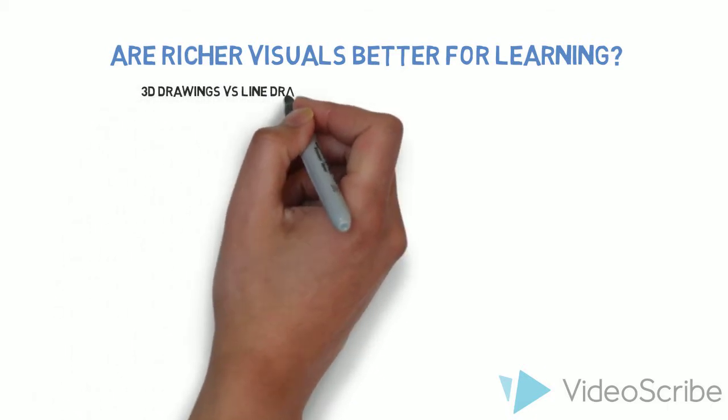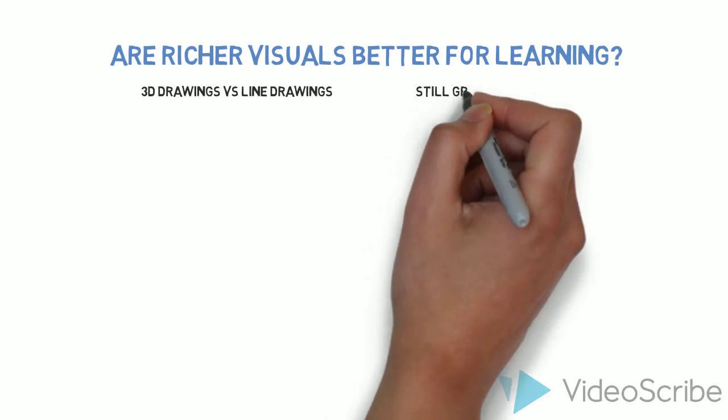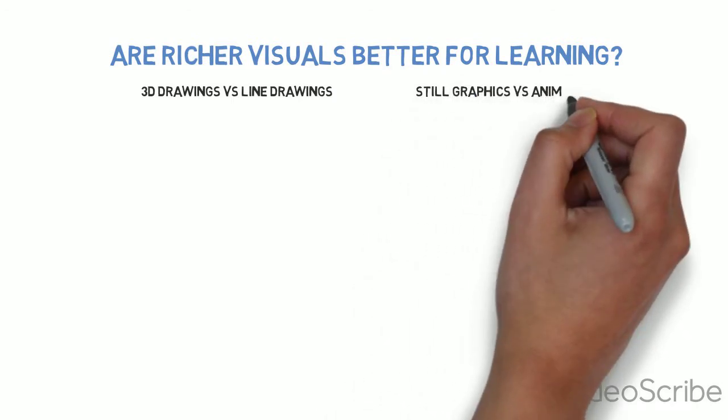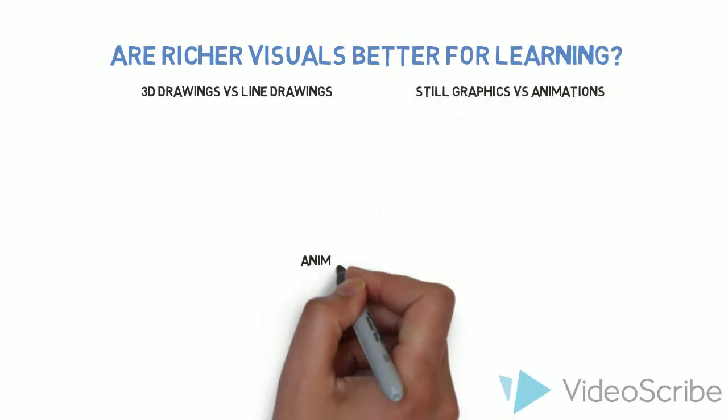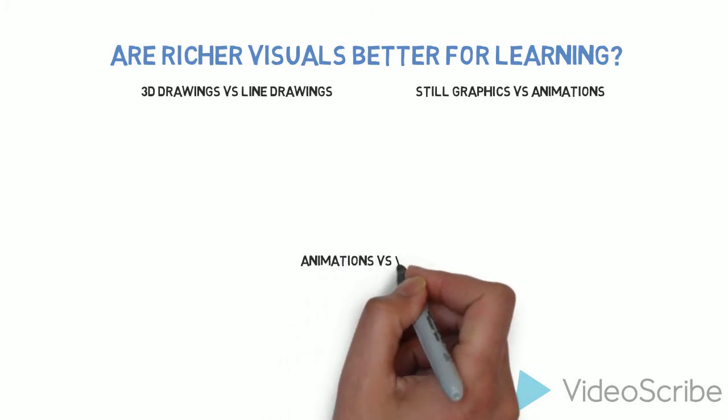We'll examine three ways to compare types of rich media. 3D drawings versus line drawings, still graphics versus animations, and animations versus videos.